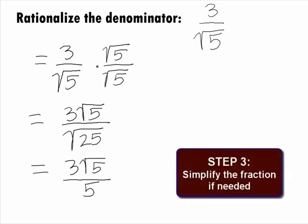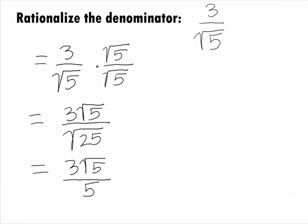In Step 3, we want to simplify the fraction. In this case, there is no simplifying that can be done, so our final answer is 3 square root of 5 over 5.